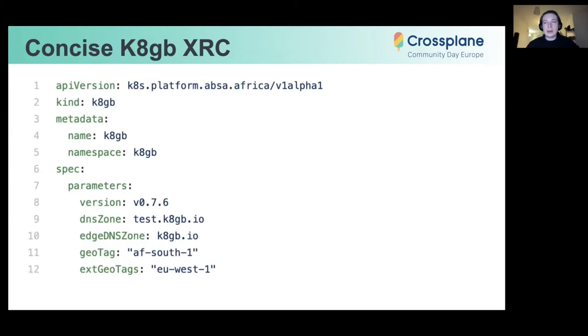So here is an example of a Crossplane composite resource claim, which provides an interface for end users, the technical customers, or whatever services or humans interface with the Kubernetes API. We are exposing just five required configuration endpoints to drive the K8GB installation on our multiple clusters.